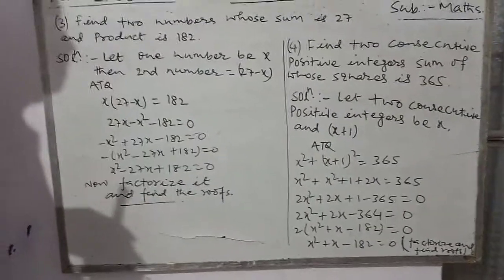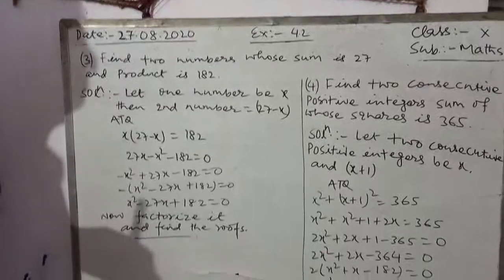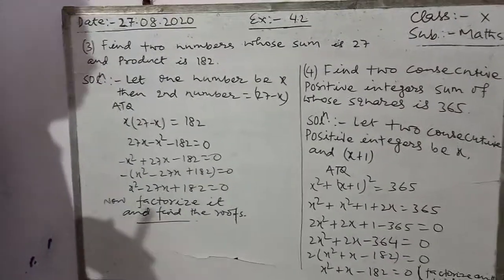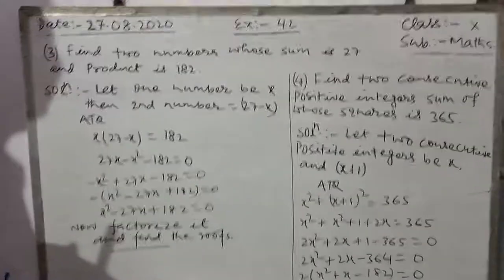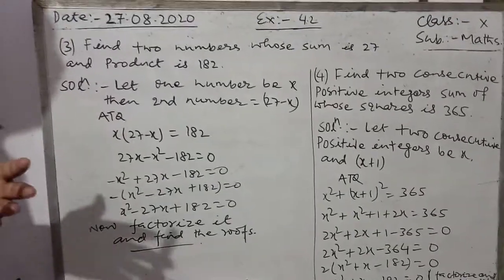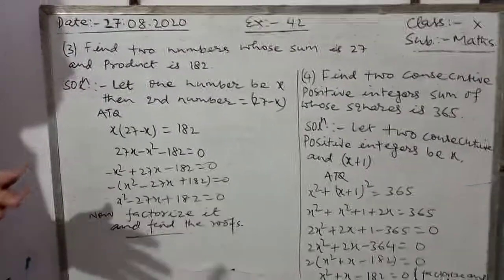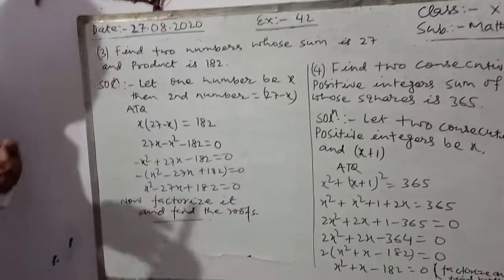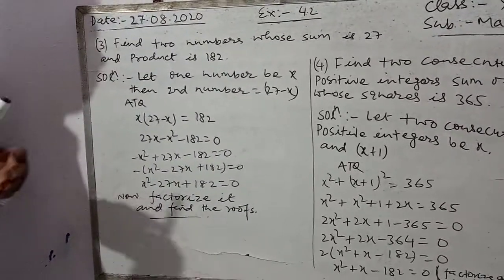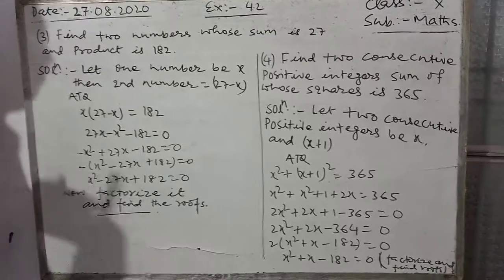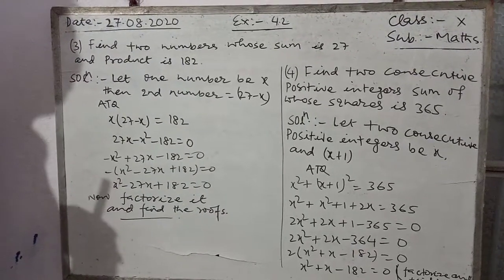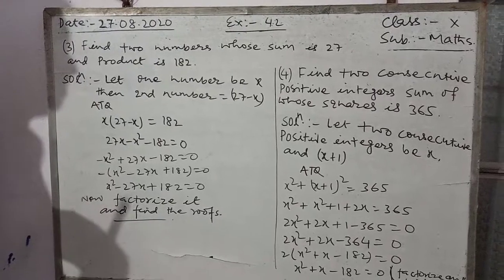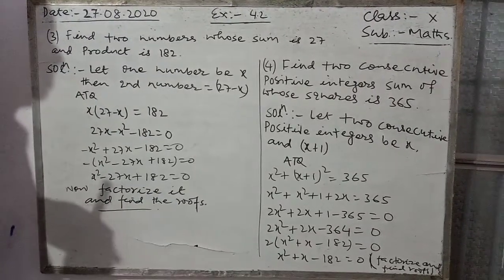For example, consecutive positive integers can be 3, 4 or 4, 5 or 5, 6 or 8, 9. So these pairs are examples of two consecutive positive integers.